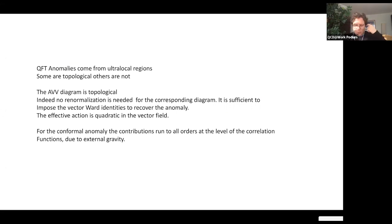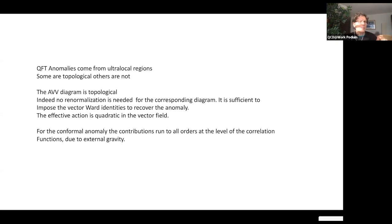Anomalies can be global or local, but an important distinction is that some are topological and others are not. For a topological anomaly — such as the usual axial anomaly — you don't need to regulate the diagram; you just impose the Ward identity to get the anomaly. The same happens for the Euler (E) contribution to the conformal anomaly, since E is topological in d=4 and is not a counter term in the renormalization of the effective action.